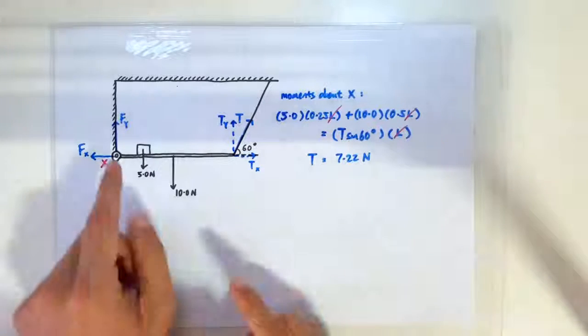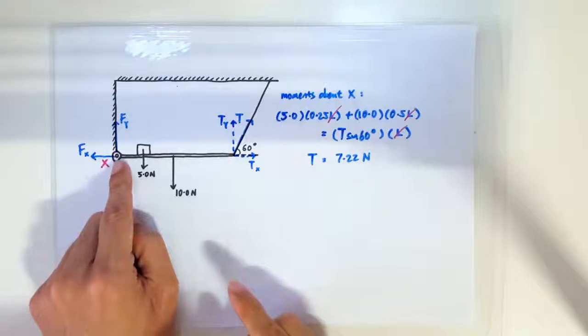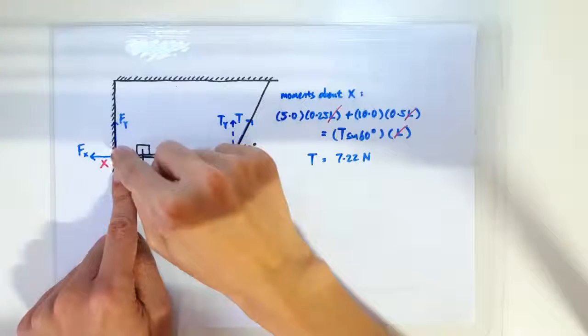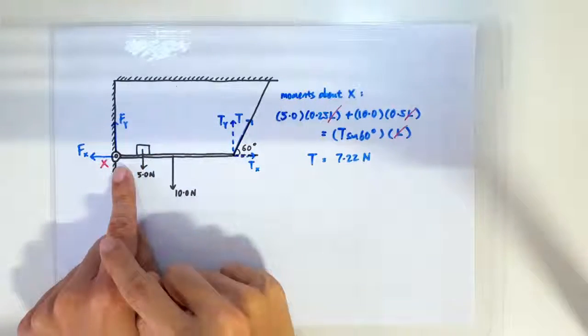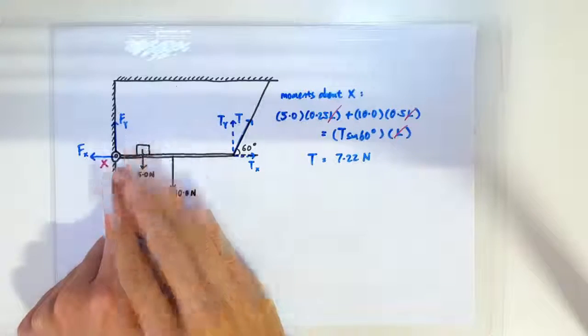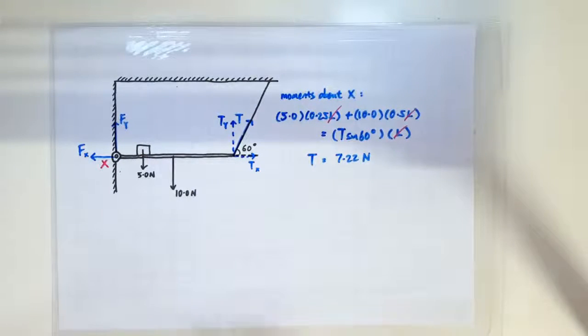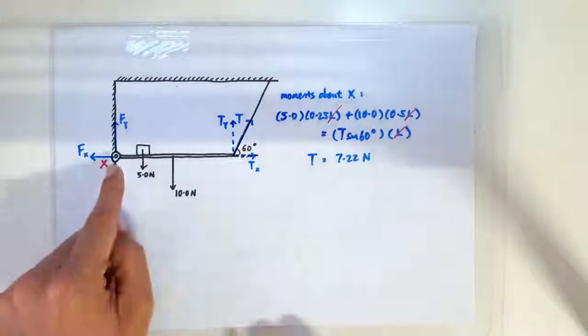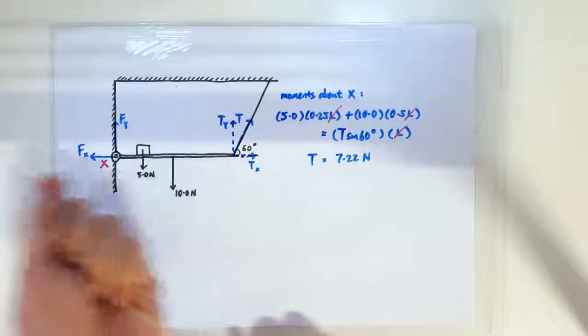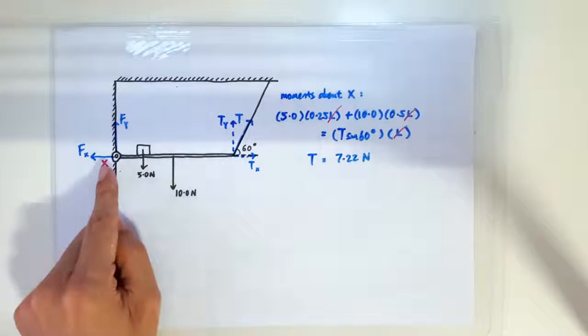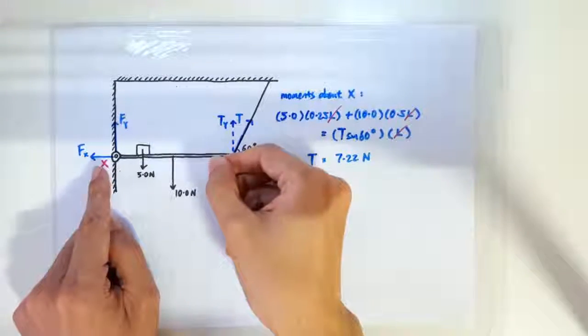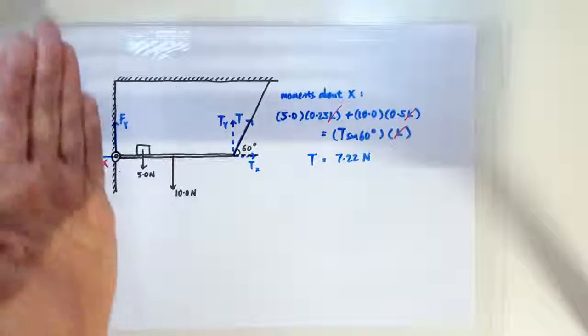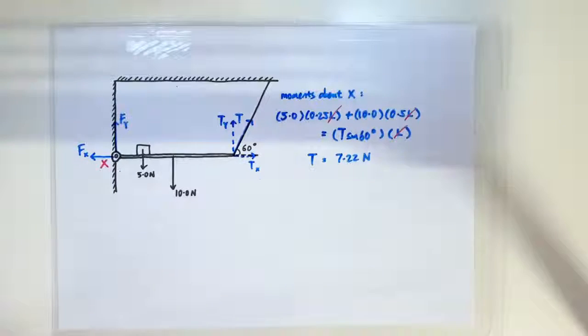Now let's move on to solving the force that the hinge exerts on the beam. And we are going to solve the vertical and horizontal components of that hinge force separately. Because the rope is pulling the beam rightward, the hinge must be pulling the beam leftward. If not for the hinge, the beam would have been pulled out of the wall. As for the vertical component, I just assume that it's going to be upward. It's just my guess.